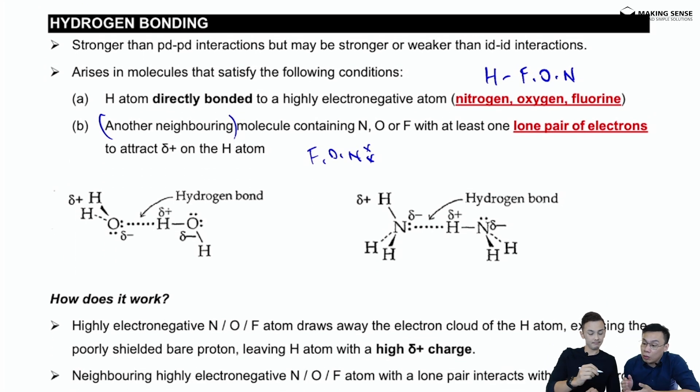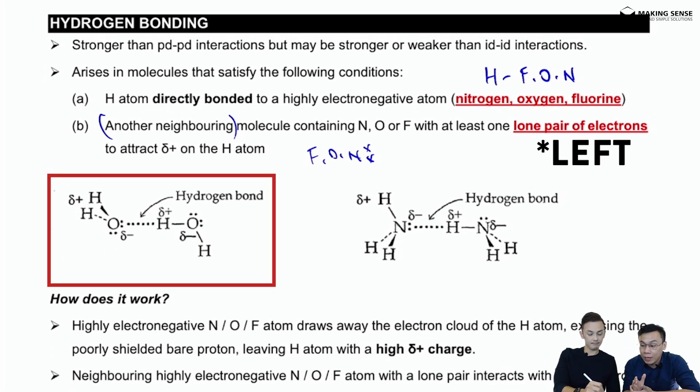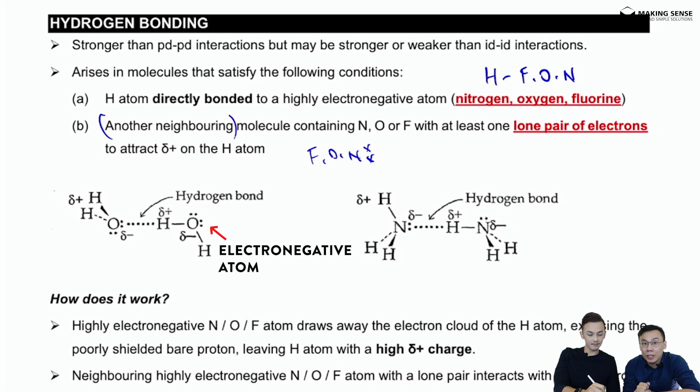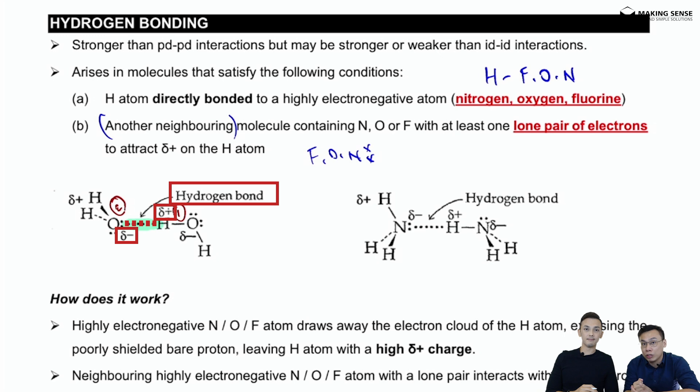If you look at the diagram, let's look at the water molecule on the right hand side first. The H atom is bonded to oxygen, so it is delta plus. On the neighboring oxygen atom, there are two lone pairs of electrons, so this lone pair will attract the delta plus of the other H on the other water molecule. That particular interaction is a very strong interaction called hydrogen bond.